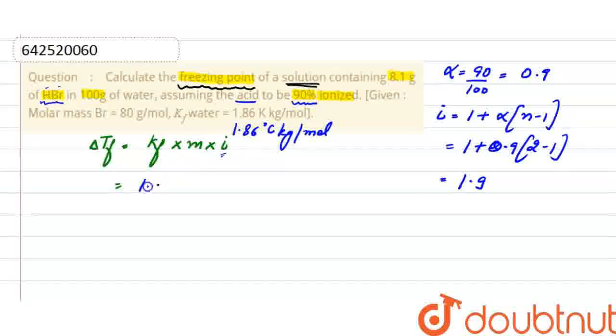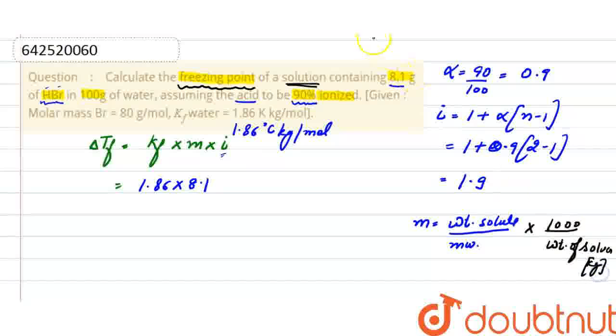Put all the values: 1.86, and molality with the weight of solute being 8.1. What is molality? Molality is the weight of solute divided by molecular weight of solute, times 1000, divided by weight of solvent in kg.